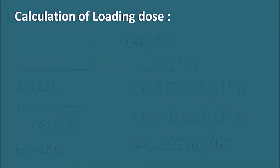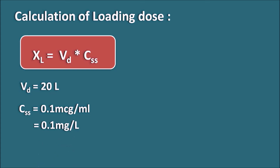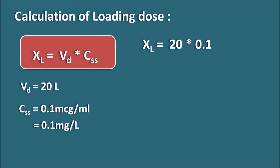To calculate the loading dose: XL = Vd × CSS = 20 L × 0.1 mg/L = 2 mg. We must give a loading dose of 2 mg in order to achieve the steady state concentration of 0.1 μg/mL immediately.